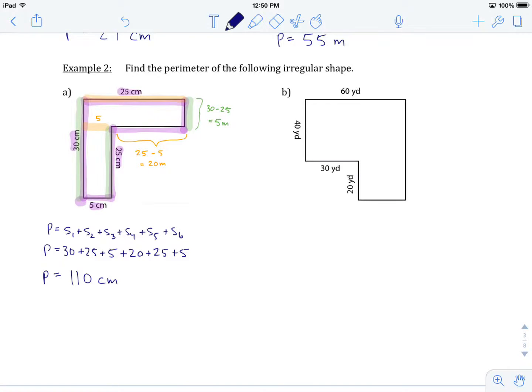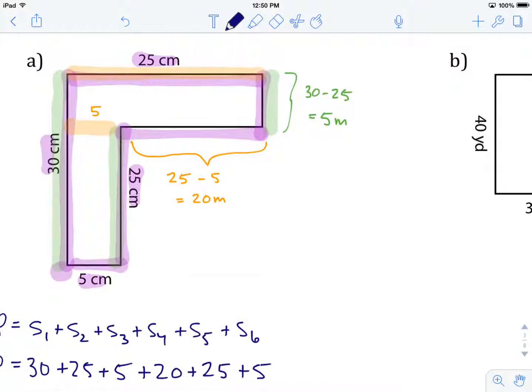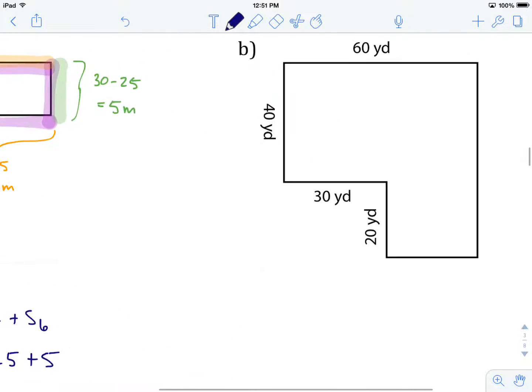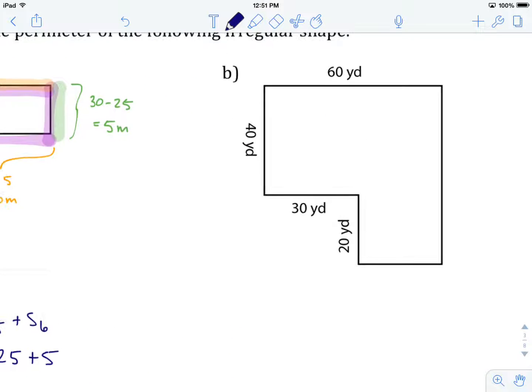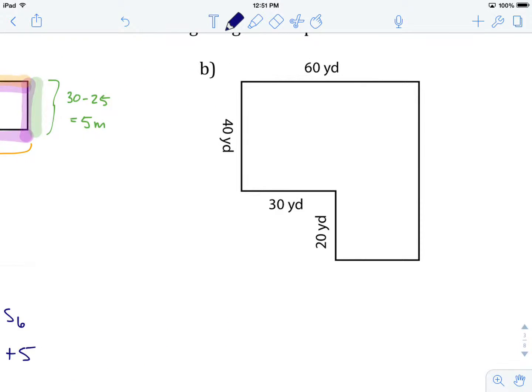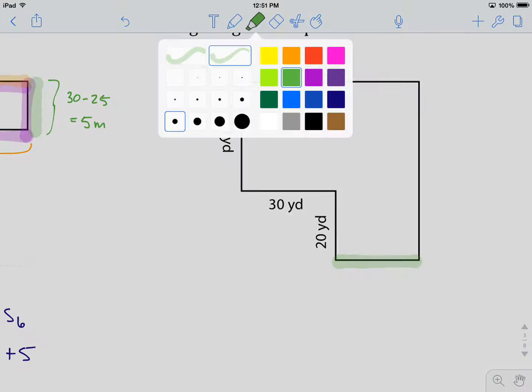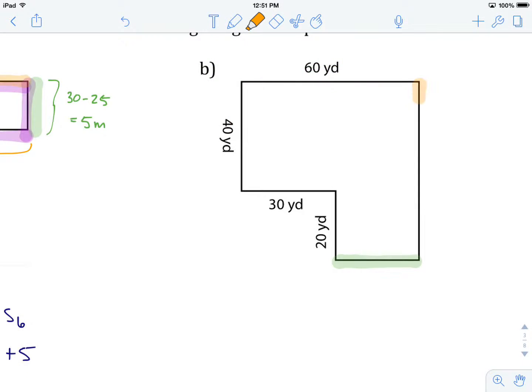So again, just to review that, what I did was for the missing side lengths, I just subtracted the length I knew from a second length I knew to get my unknown side length. So what I'd like you to do is have a look at B. First thing I'd like you to do is try to identify the lengths of the couple of sides that we're missing. And that would be this side right here. And the second side that we're missing is this side here. So what I'd like you to do is hit pause on the video. See if you can figure out these two side lengths. When you think you've got them, come back to the video and we'll talk about how you found it.